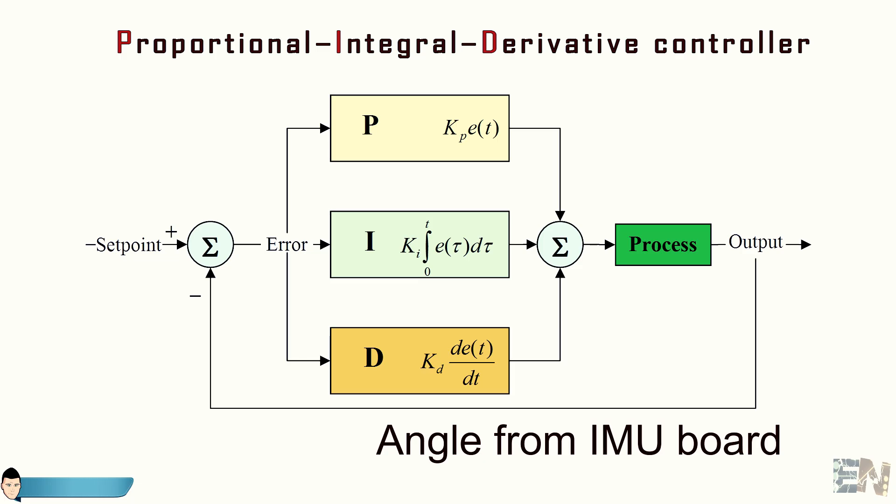Now we first have to calculate the error of our control. This error is the difference between a desired value and the real value of the system. In our case our desired value is zero degree angle of the metal bar and the real value is the data received from the IMU unit.